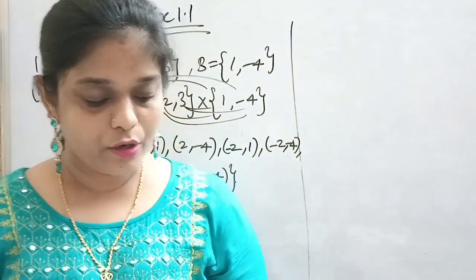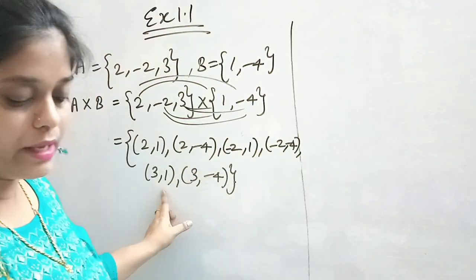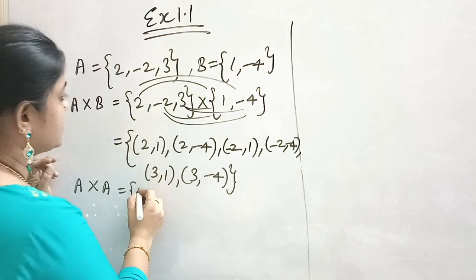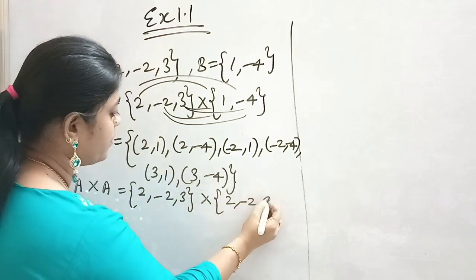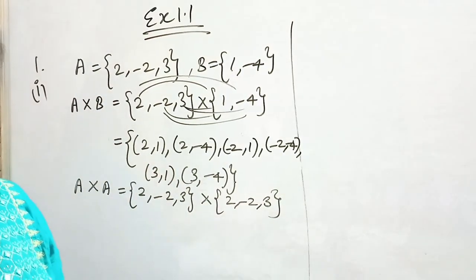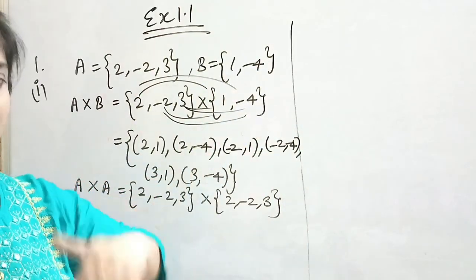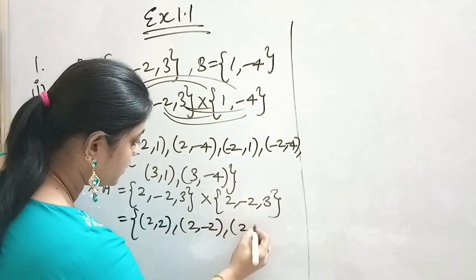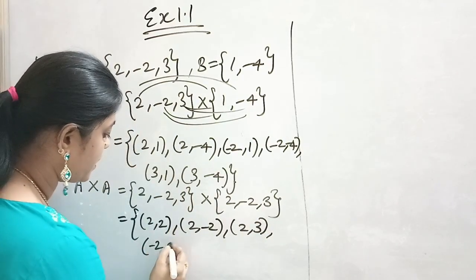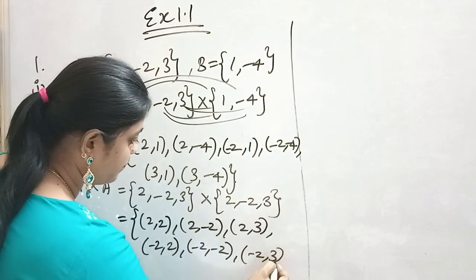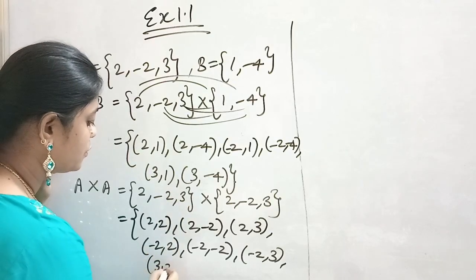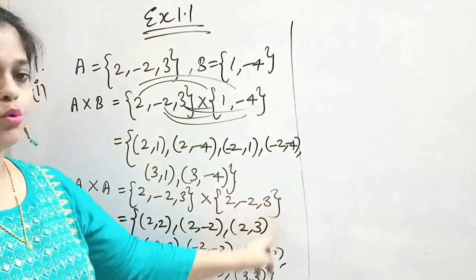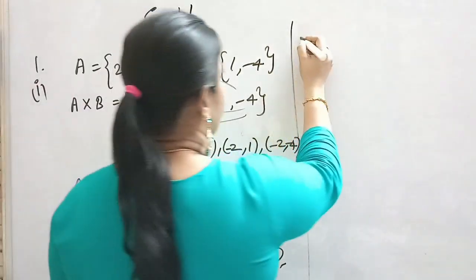So A cross B is: {(2,1), (2,-4), (-2,1), (-2,-4), (3,1), (3,-4)}. Next they are asking A cross A. A cross A means A set is crossed with A set again. So A set is {2, -2, 3} cross {2, -2, 3}.